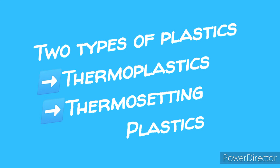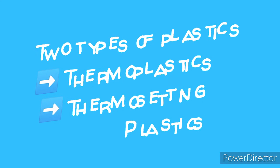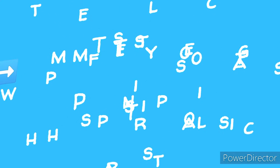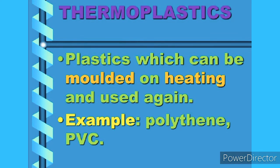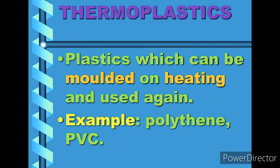Plastics can be broadly classified as thermoplastics and thermosetting plastics based on how they react to heat. Some plastics easily get deformed on heating and can be easily bent and reshaped by heating — these are called thermoplastics. Examples include polythene and PVC.